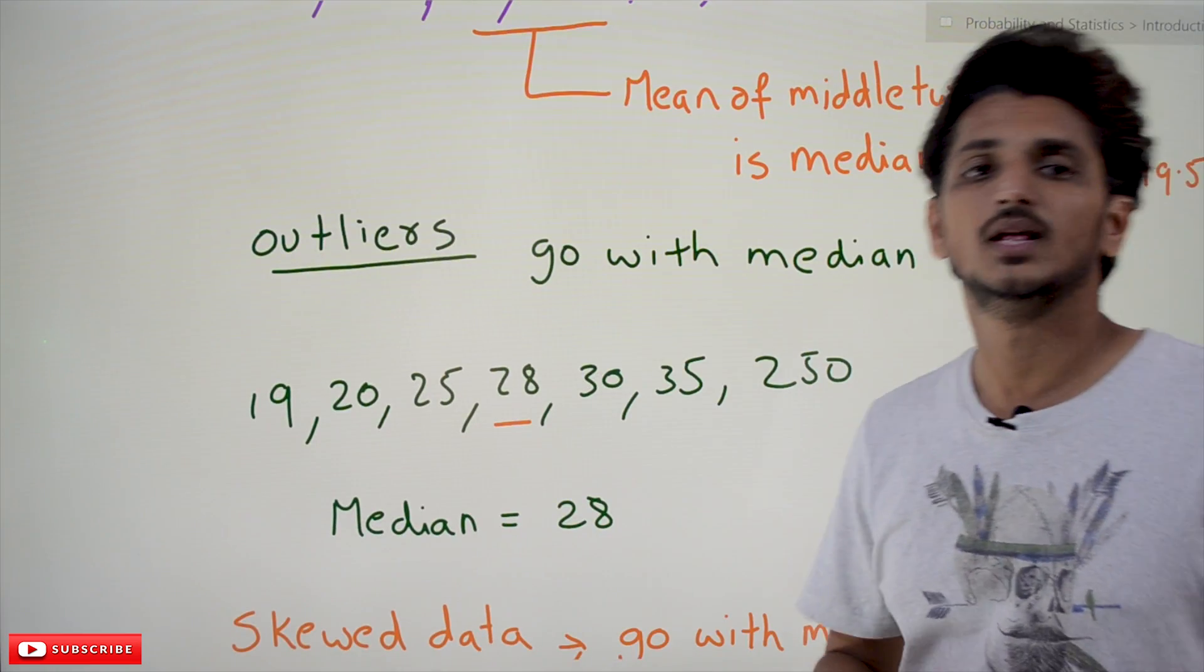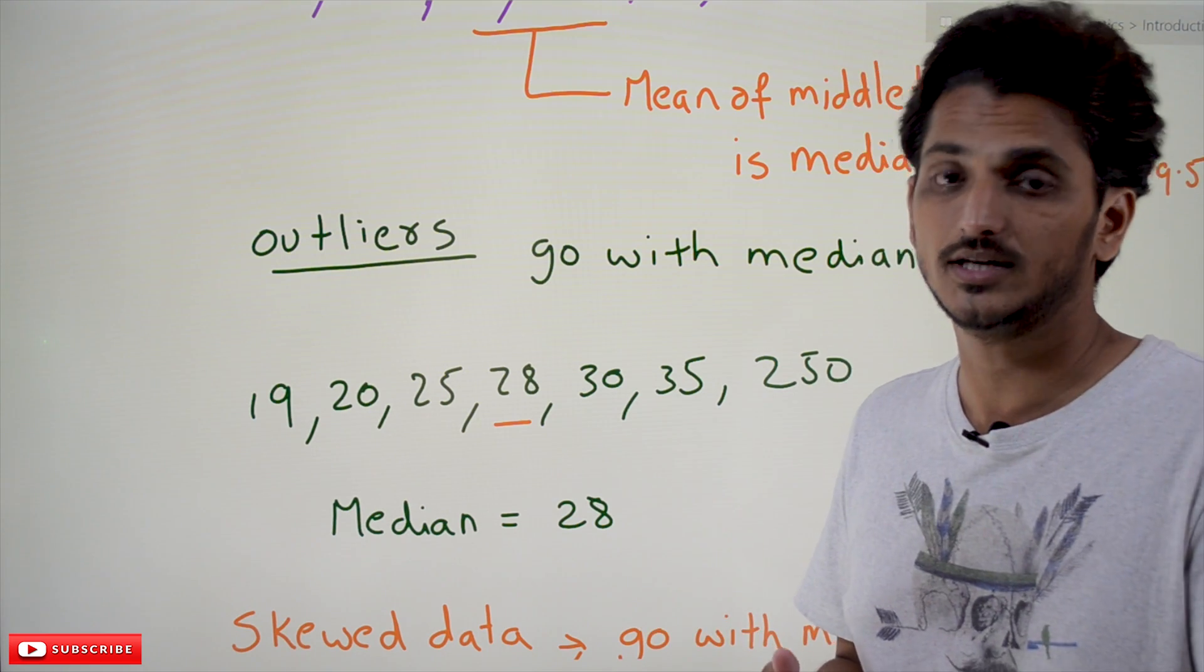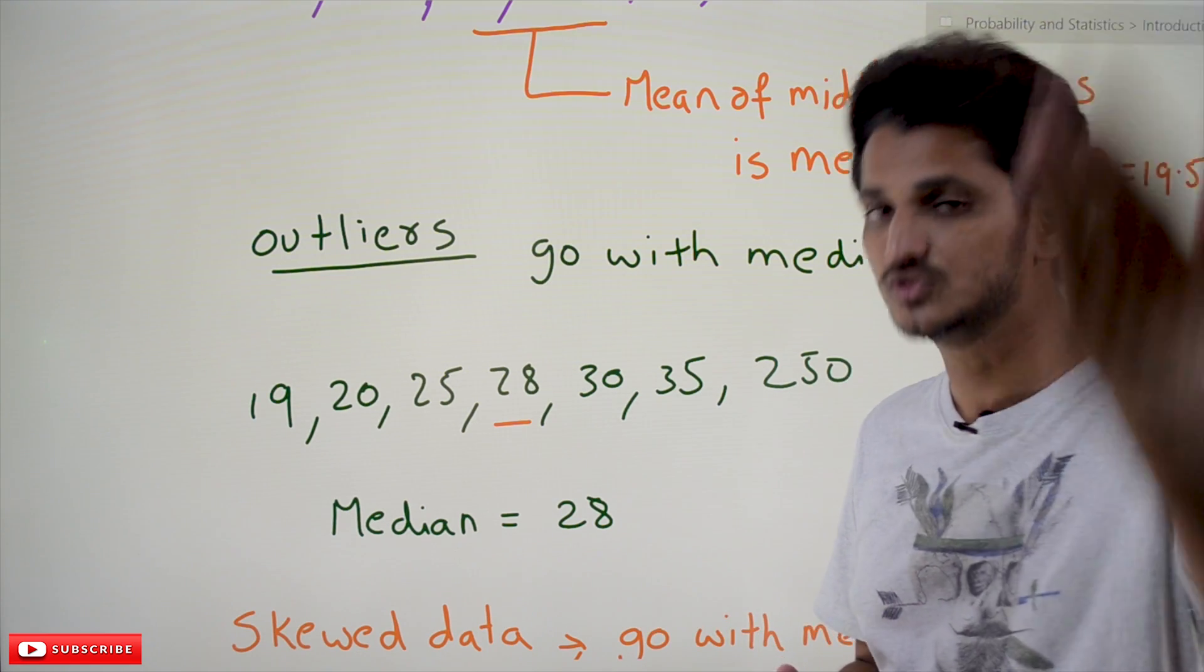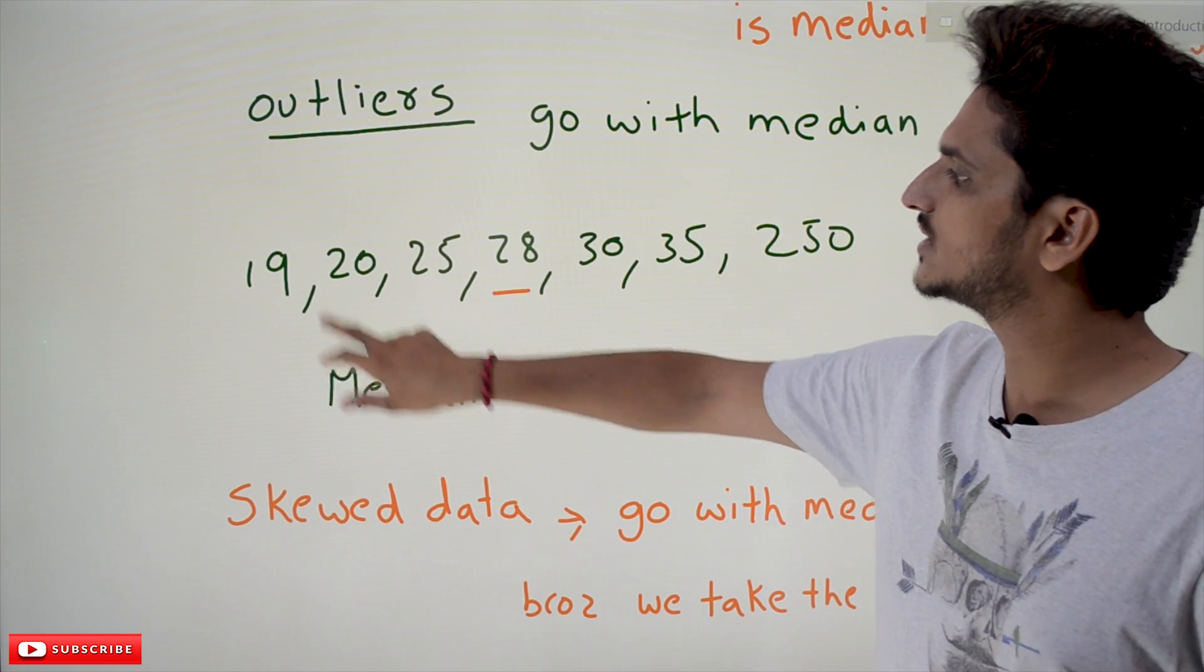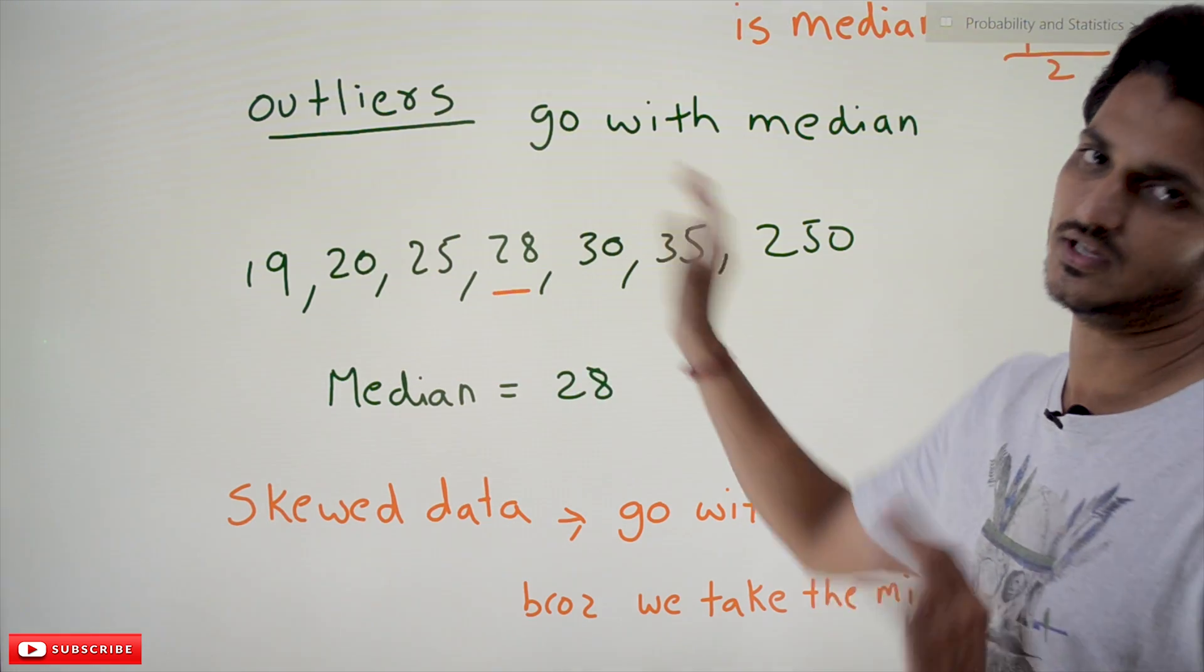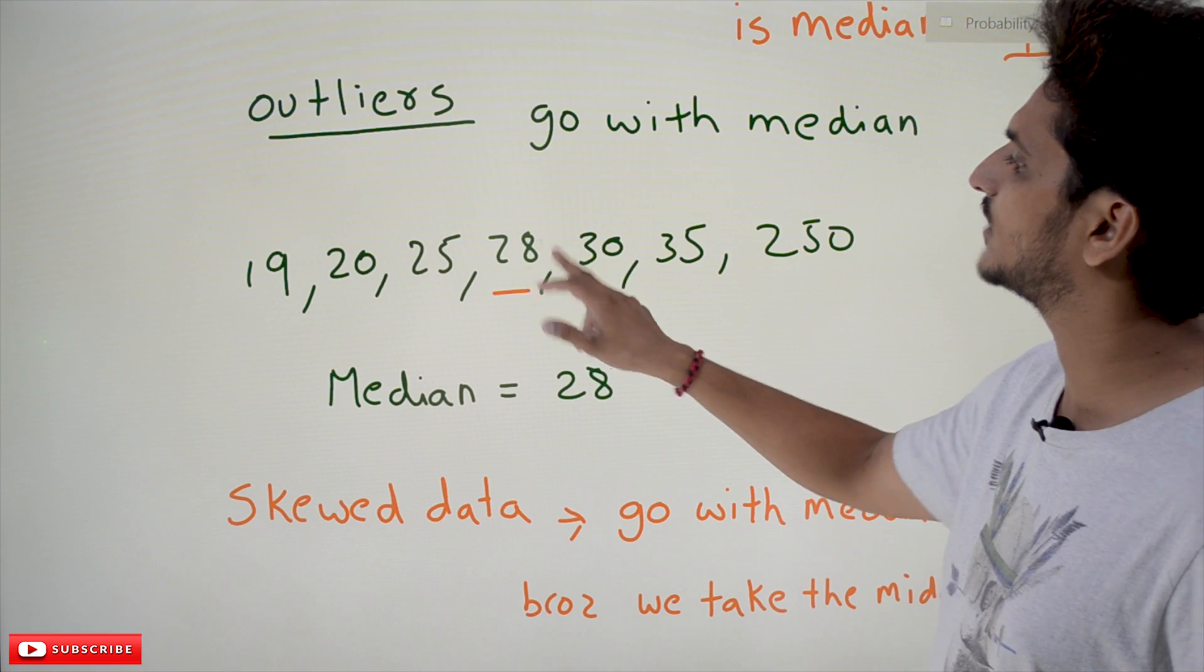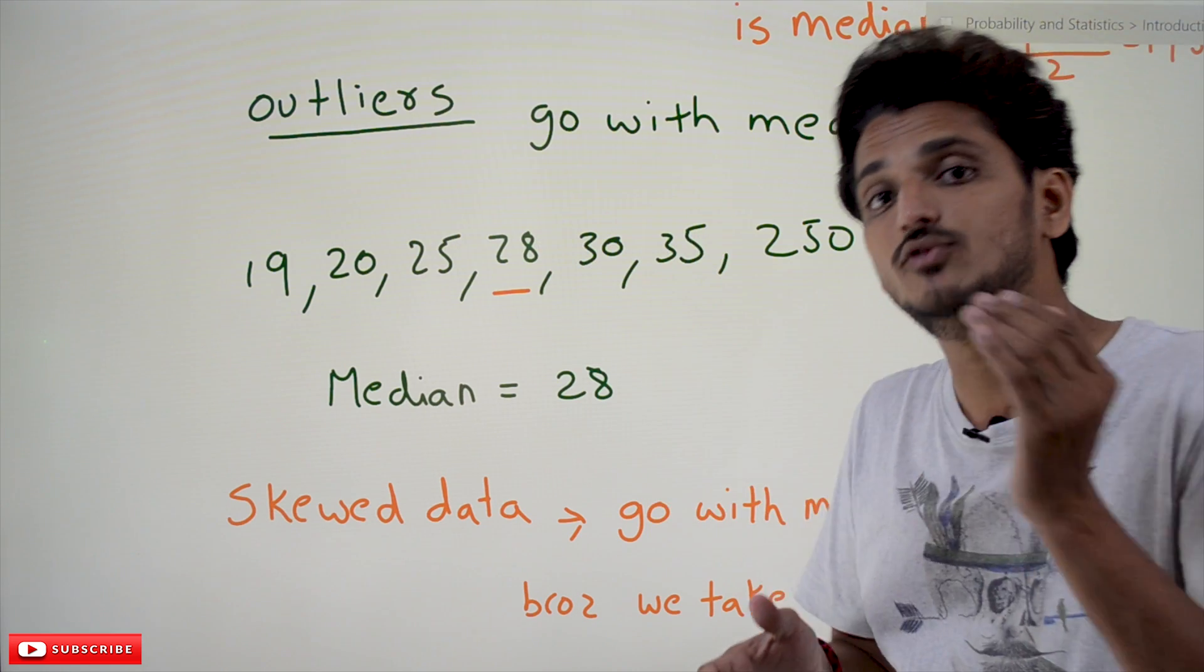Whatever example we considered when we discussed arithmetic mean, let's take the salaries of employees. Most of the employees' salaries are around 19, 20, 25, 28, 30, 35 thousand. If you add the CEO's salary to this, the CEO salary is 250.